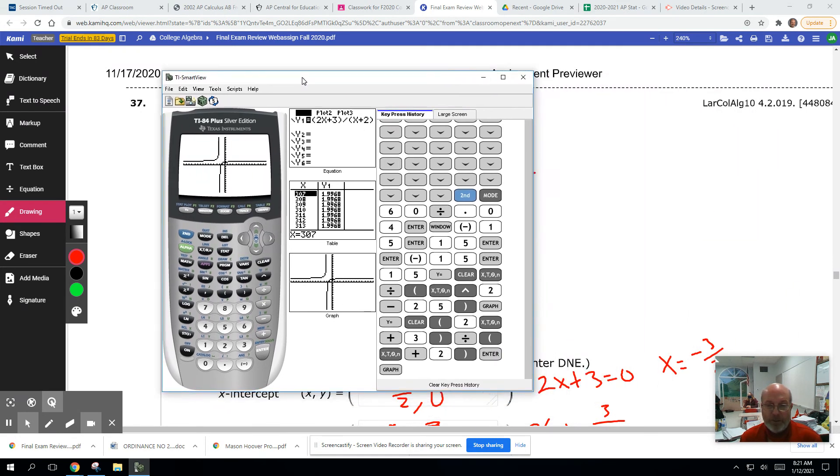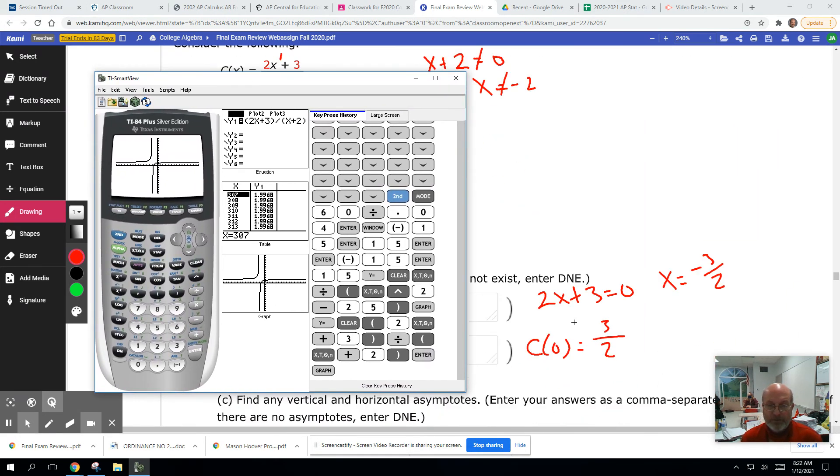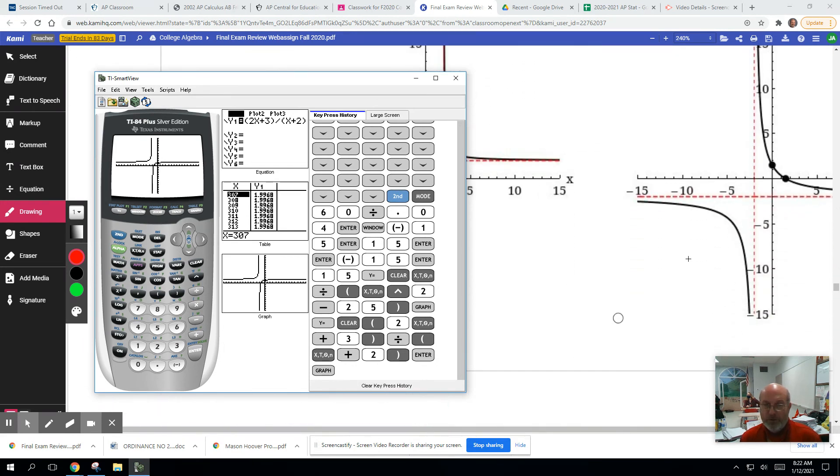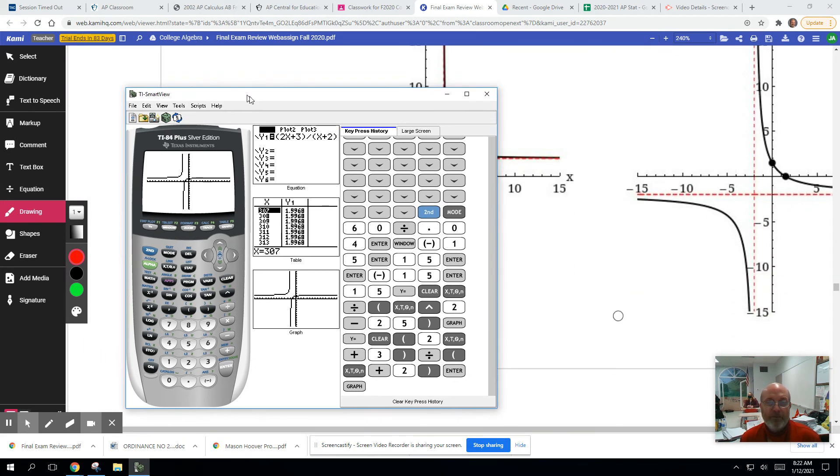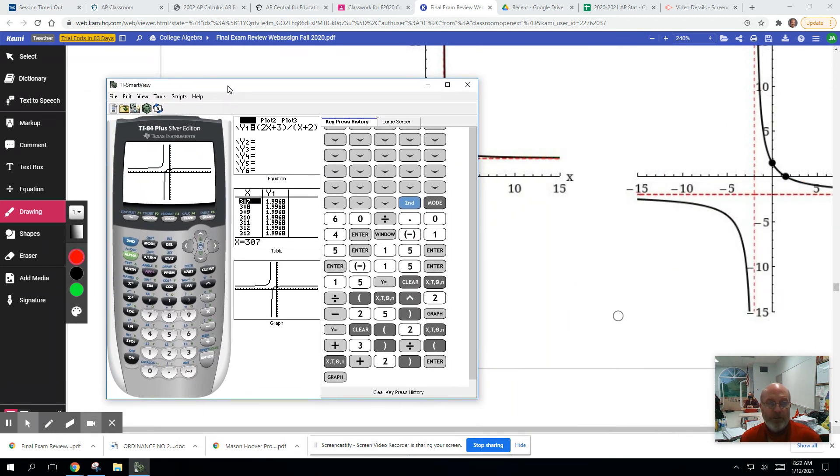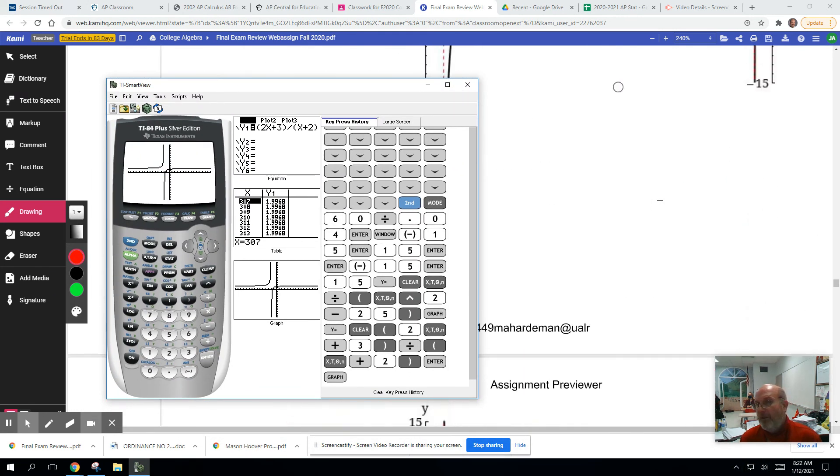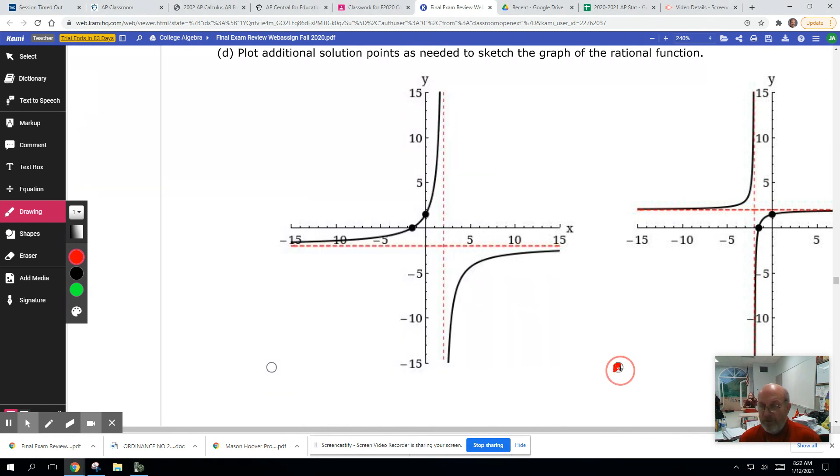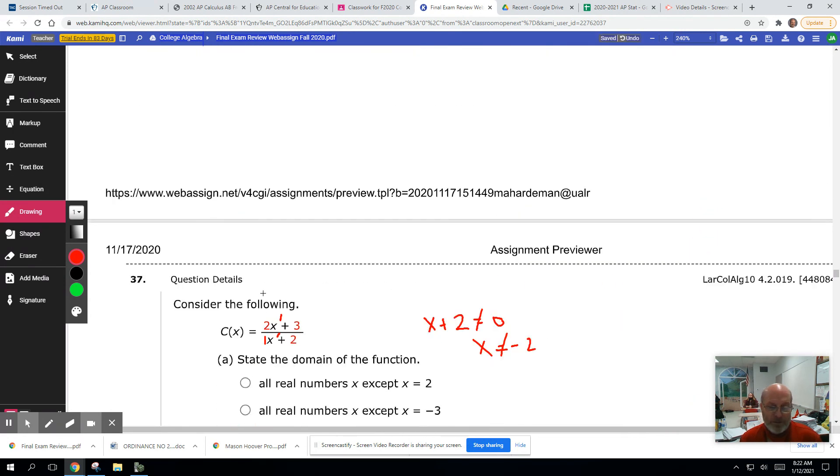So now we'll go and see if we can match that with one of the graphs. This looks like it could be it right here. Let's double check and make sure. I believe that's going to be it. So that's how we do number 37.